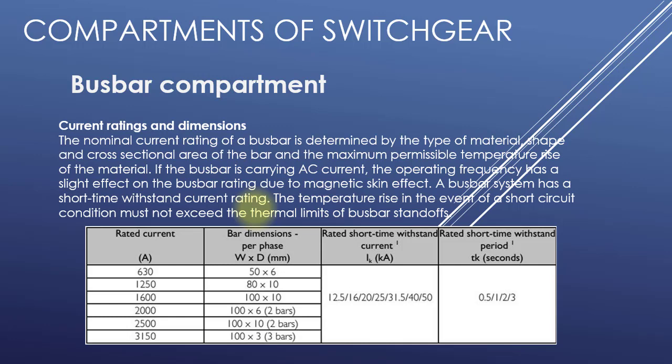Bus bar compartment current rating and dimensions: the nominal current rating of a bus bar is determined by the type of material, shape, and cross-sectional area of the bar, and the maximum permissible temperature rise of the material. If the bus bar is carrying AC current, the operating frequency has a slight effect on the bus bar rating due to the magnetic skin effect.